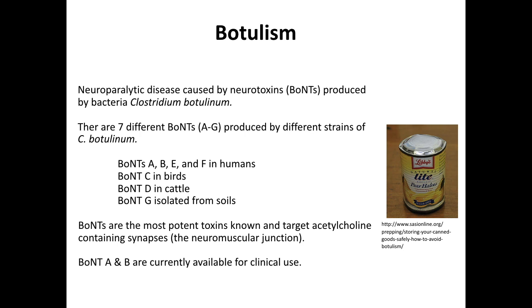Types A, B, E, and F cause disease in humans, whereas the others affect birds and cattle. Botulinum toxins are the most potent toxins known, and they target the neuromuscular junction.